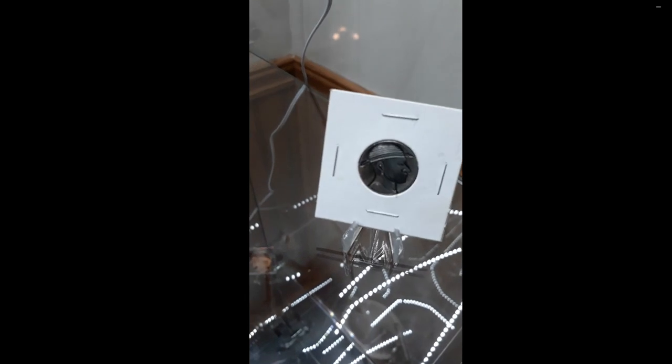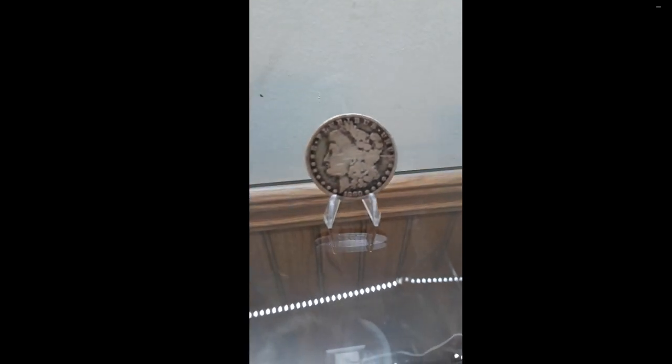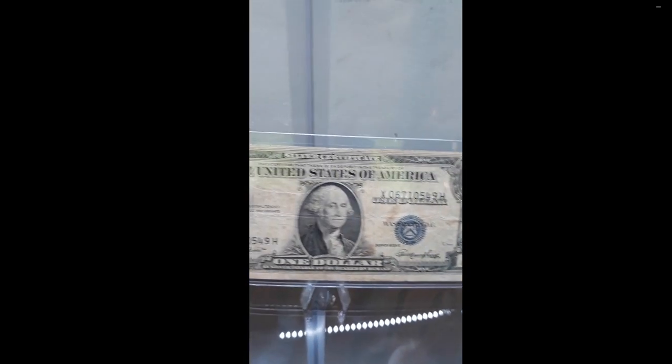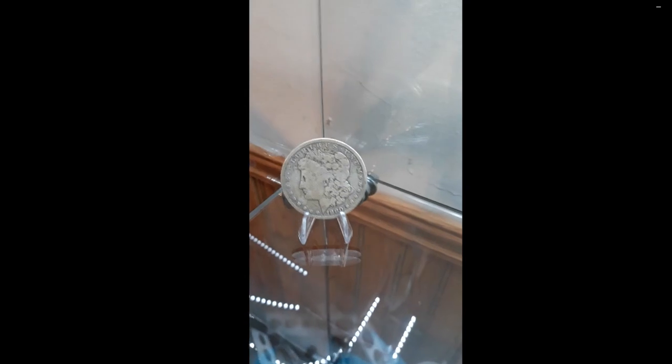And down here we've got a hobo nickel, we've got a Morgan, another Morgan, a silver certificate has a little error on it, another gnome, another Morgan.